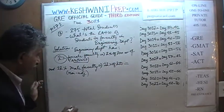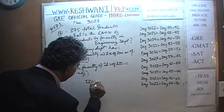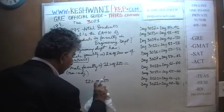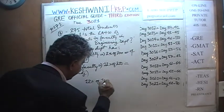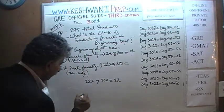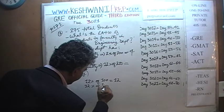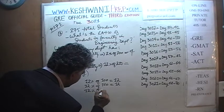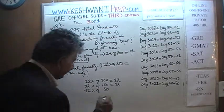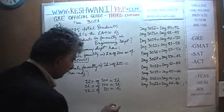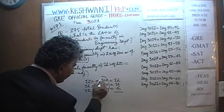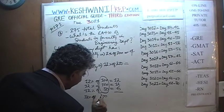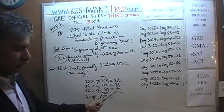How much is 12% of 250? We know 12% of 100 is 12. 12% of another 100 is another 12. And 12% of 50 — if 12% of 100 is 12, then 12% of 50 must be 6. So: 100 + 100 + 50 = 250. Therefore 12% of 250 = 12 + 12 + 6 = 30.